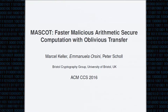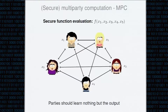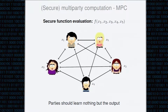In this work we present MASCOT. MASCOT is an MPC protocol. Secure multi-party computation means exactly what we expect — it's secure function evaluation. Our problem is that we have a set of parties and they want to jointly compute an arbitrary function f on their inputs while keeping those inputs private.